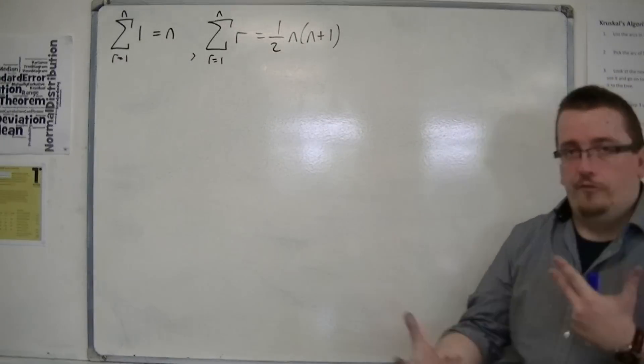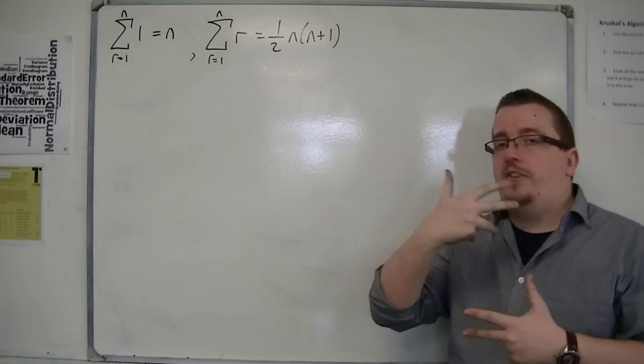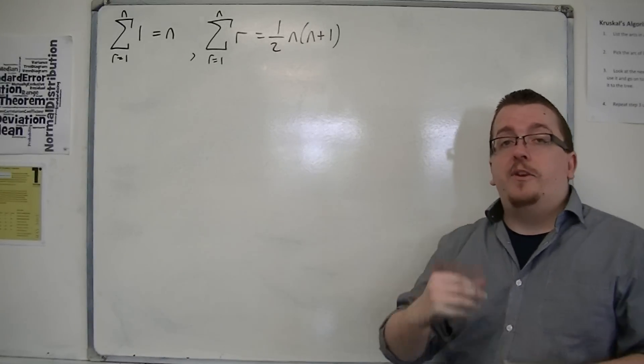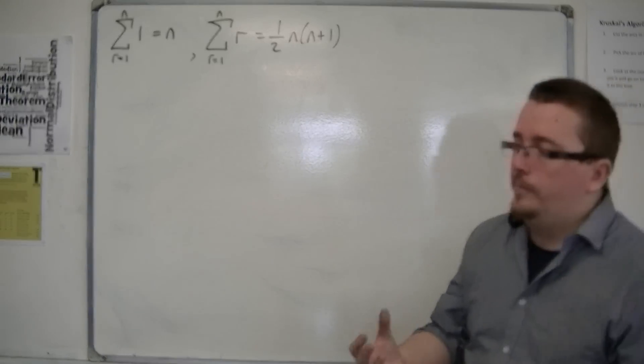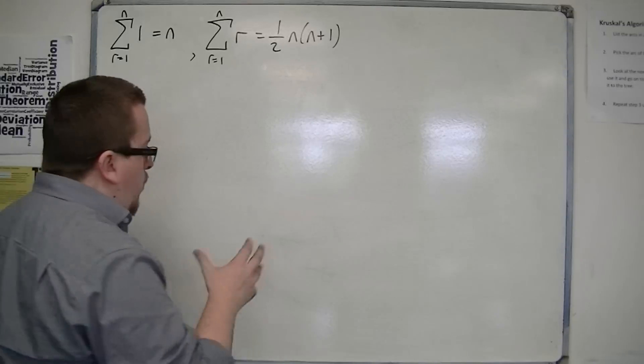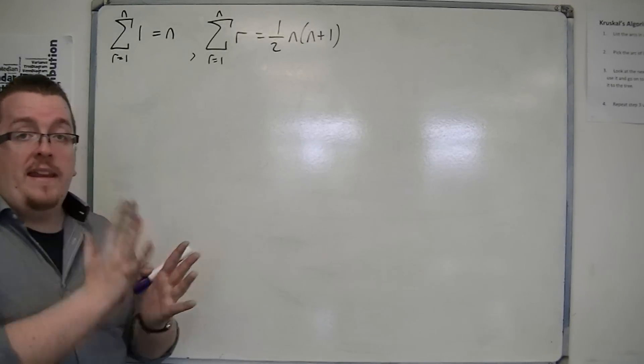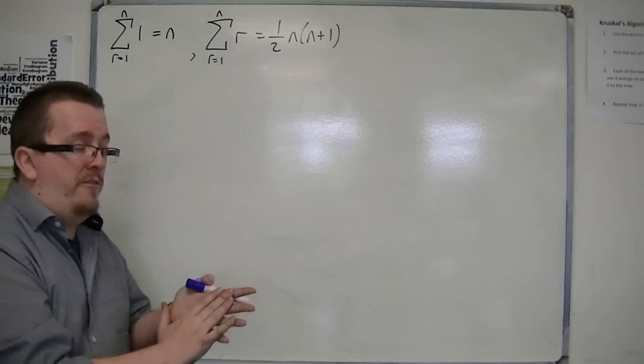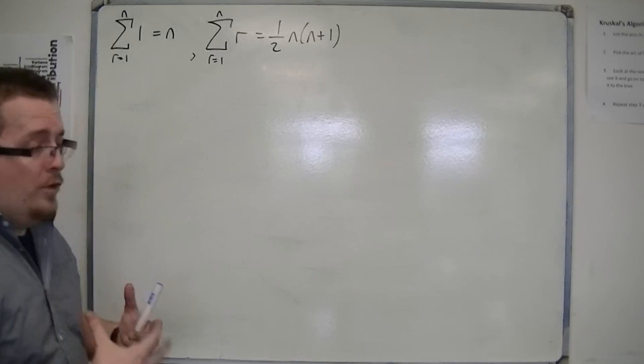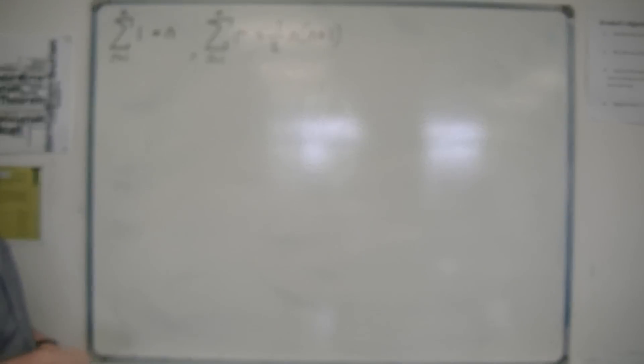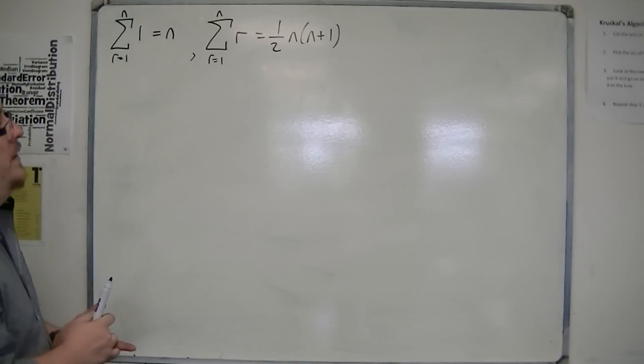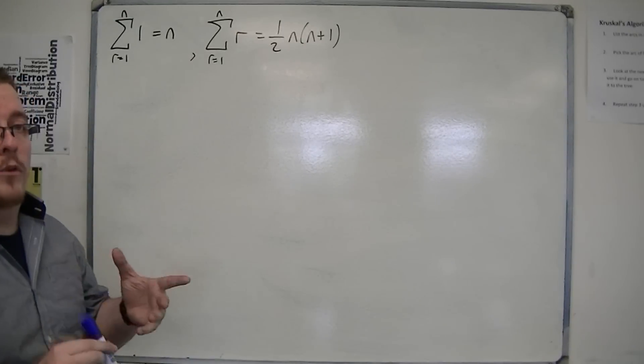Now there are two others that are given to you in the formula booklet, the sum of the first n square numbers and the sum of the first n cube numbers. Now where these actually come from is looked at in FP2 rather than FP1. So we don't look at them here, but we just need to know how to use them.